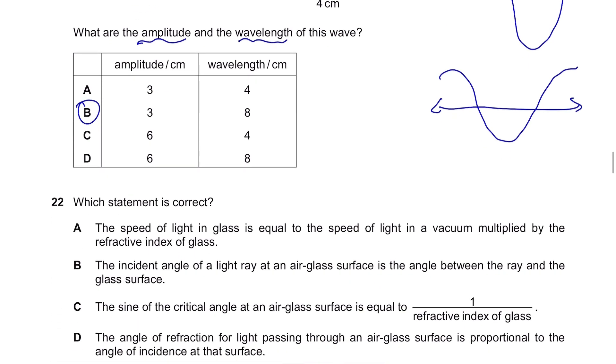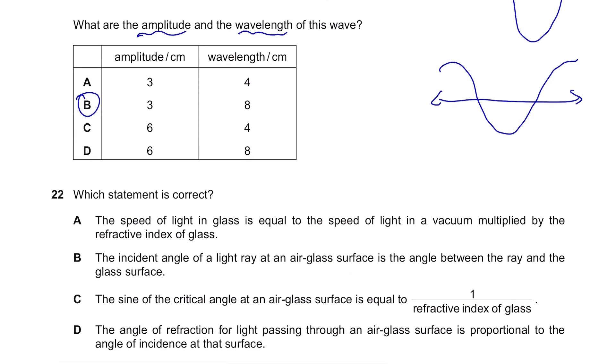Question 22. Which statement is correct? The speed of light in glass is equal to the speed of light in a vacuum multiplied by the refractive index of glass. Well, the formula is the refractive index of glass represented by n equals the speed of light in a vacuum, I'll just put it as a, divided by the speed of light in glass, b. So if you want to find the speed of light in glass, that should be speed of light in vacuum divided by the refractive index of glass. So this is wrong because this should be divided.